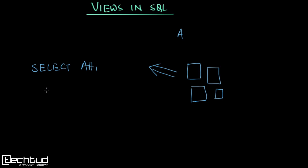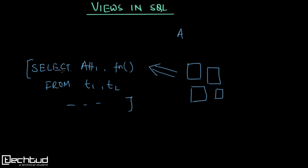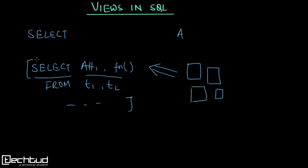He selects some attributes, performs some functions, and uses multiple tables like t1, t2, etc. Once the virtual table is ready, he makes some queries from it. For him it is easy because all the complexity is solved in that inner query. Every time he needs to generate a report, he just selects some fields from this virtual table. He realizes that if he can store this inner SQL, it will ease his problem.